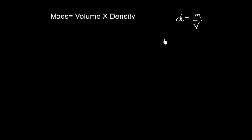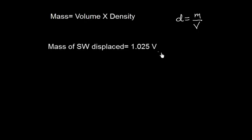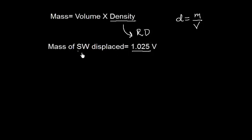We know that mass is equal to volume into density. So the mass of saltwater displaced is going to be 1.025 — that is the relative density of saltwater — multiplied by capital V, which is the volume of saltwater displaced.